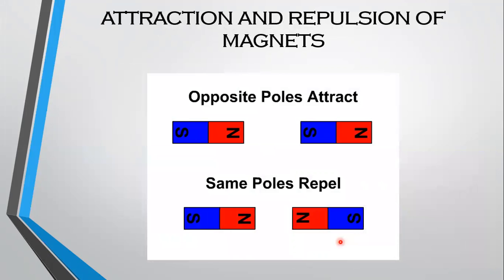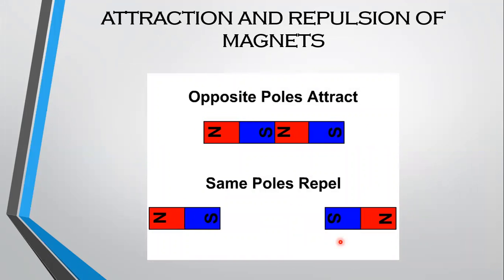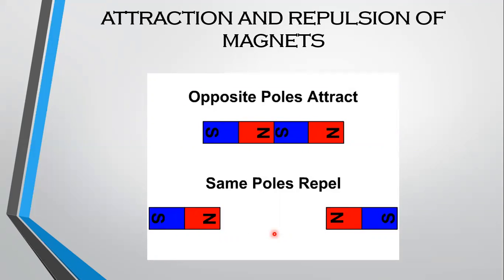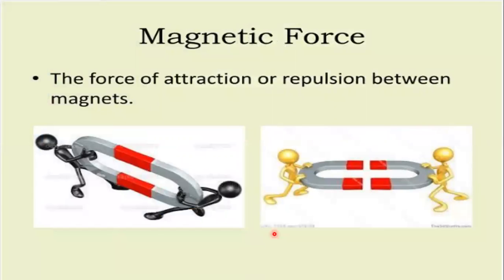Attraction and repulsion of magnets. Magnets attract each other when unlike poles are brought near each other and repel when like poles are brought near each other. The pull or push, that is the attraction or repulsion exerted by magnets on magnetic substances, is called magnetic force.